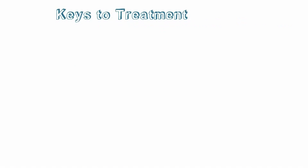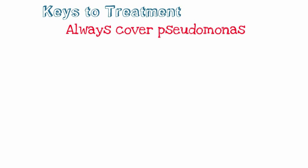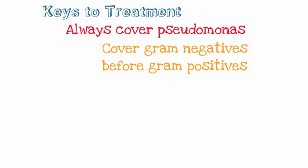Now that we have risk-stratified our patient, how do we treat febrile neutropenia? There are some keys to treatment. First, make sure you're always covering pseudomonas, because that's one of the common bugs that infects these patients and they can decline very quickly if untreated. Number two, make sure you cover gram-negatives before gram-positives — gram-negatives are associated with higher mortality and morbidity. You can survive a bit longer with a gram-positive bacteremia, so always cover pseudomonas and gram-negatives first, then consider covering gram-positive bacteria.